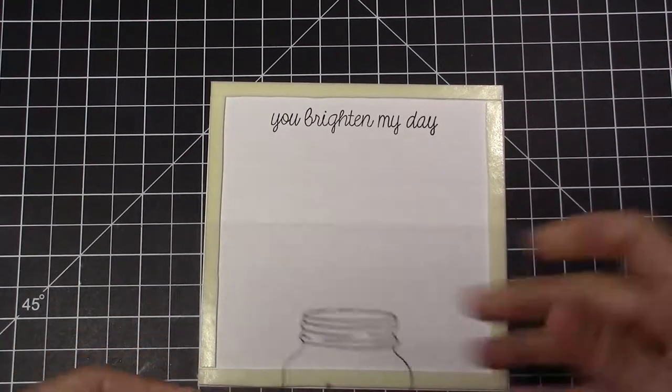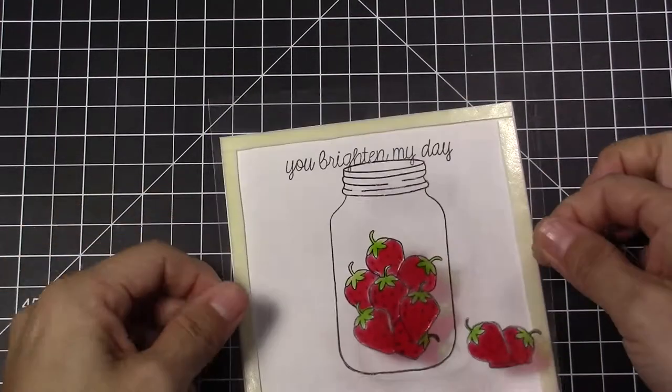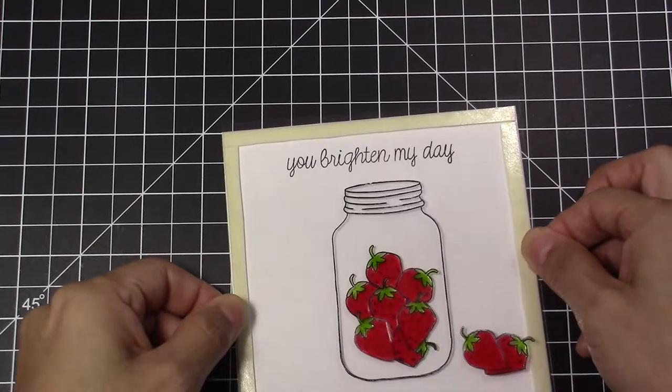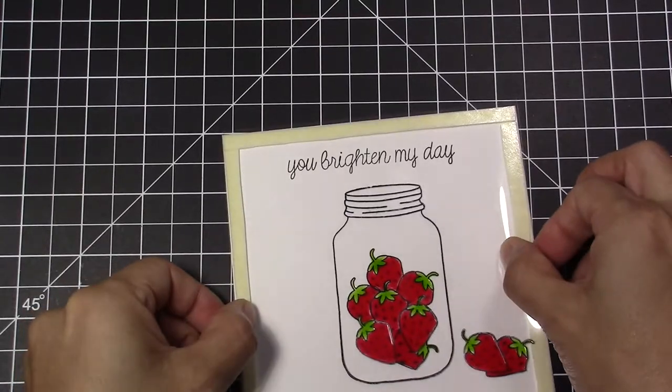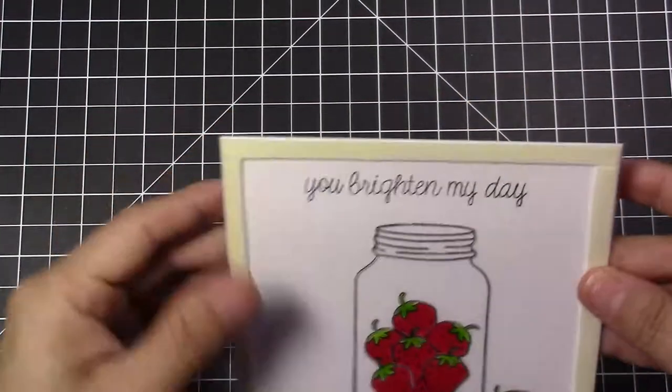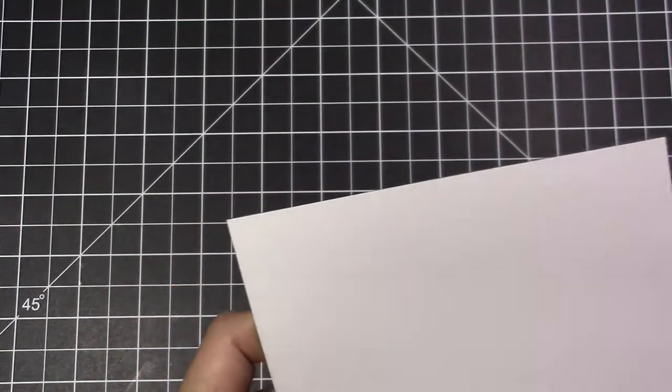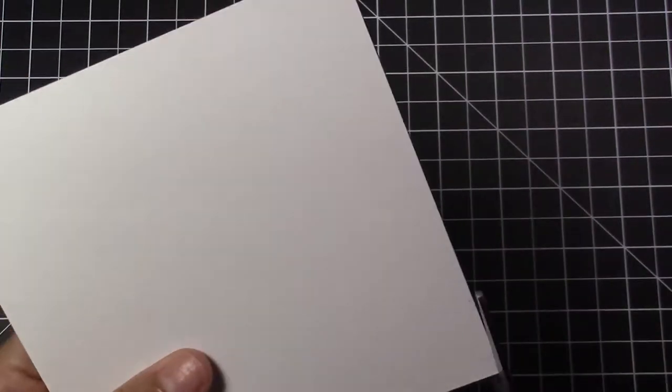After I take the protector off the foam tape, I glue my acetate and I cut a little bit of the pieces of the acetate that were hanging outside. Then I'm going to add double-sided stick tape to my frame and glue my frame.